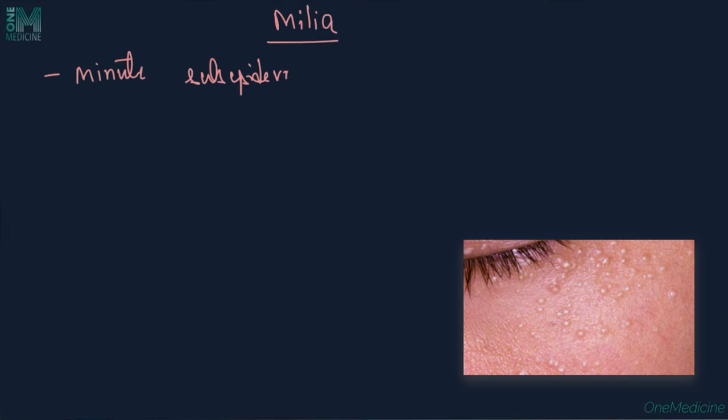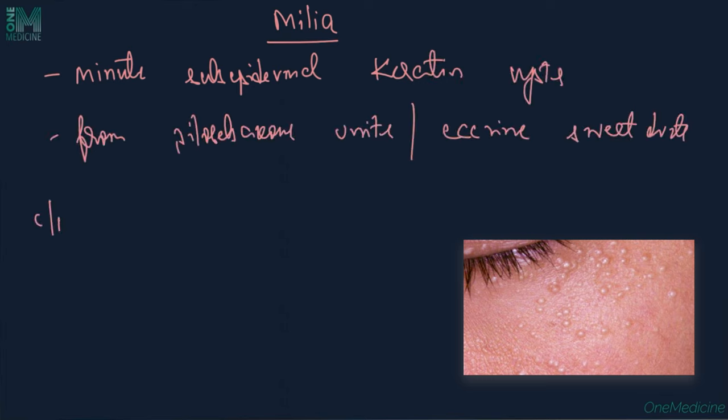Milia are minute sub-epidermal keratin cysts arising from the pilosebaceous units or eccrine sweat ducts. They present as firm, white papules, 1-2 mm in diameter.